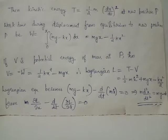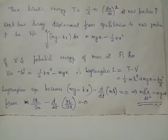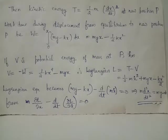Total work done W equals integral from 0 to x of (mg - kx) dx, where g is the acceleration due to gravity and k is the spring constant. After integration, you obtain work done W equals mgx minus half kx².